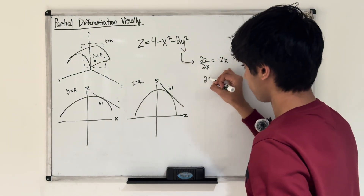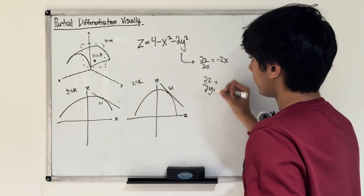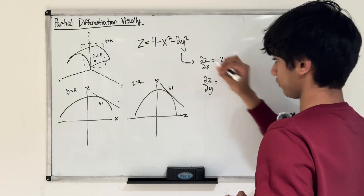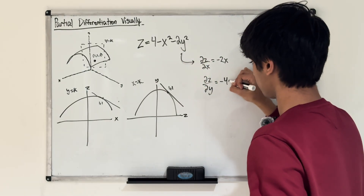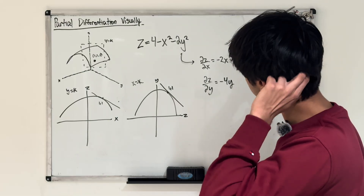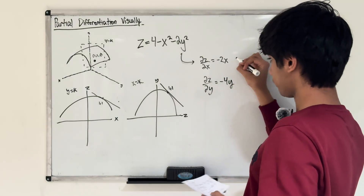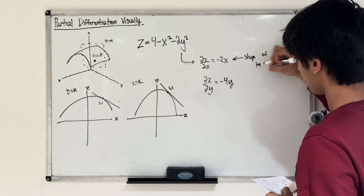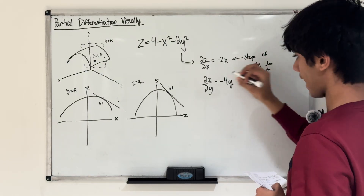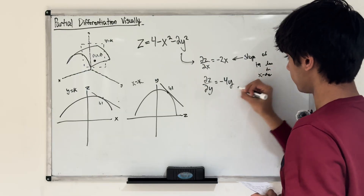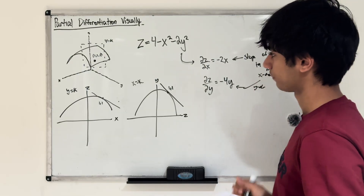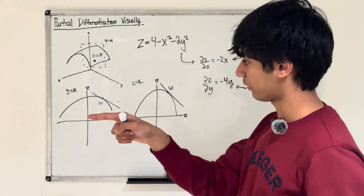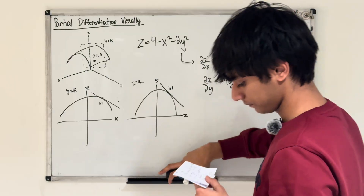Our second derivative, partial with respect to y: here x is a constant, so x squared minus is constant giving 0, and therefore the derivative of negative 2y squared is negative 4y. That's our partial with respect to y. This means the slope of the tangent line in the x direction, and the other is the slope of the tangent line in the y direction — we're looking at only one direction, only how it changes in one direction.